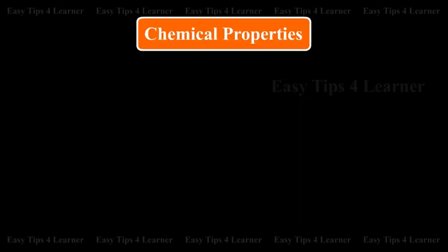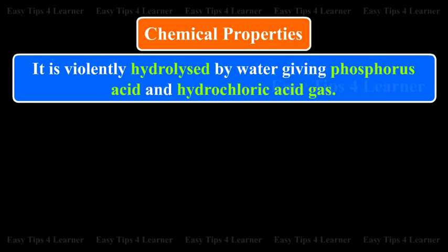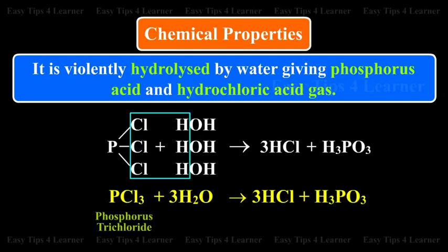Chemical properties: It is violently hydrolyzed by water, giving phosphorus acid and hydrochloric acid gas. Phosphorus trichloride plus water gives hydrochloric acid plus phosphorus acid.